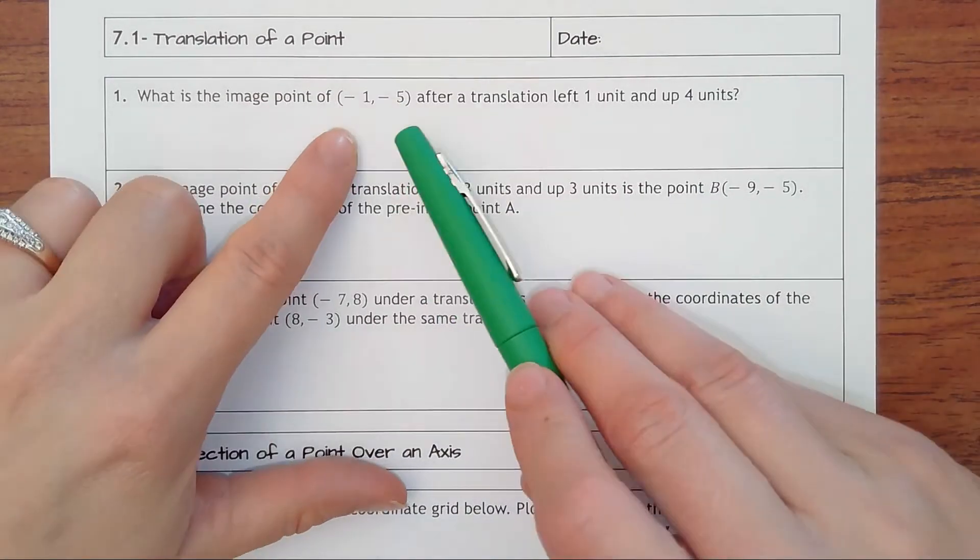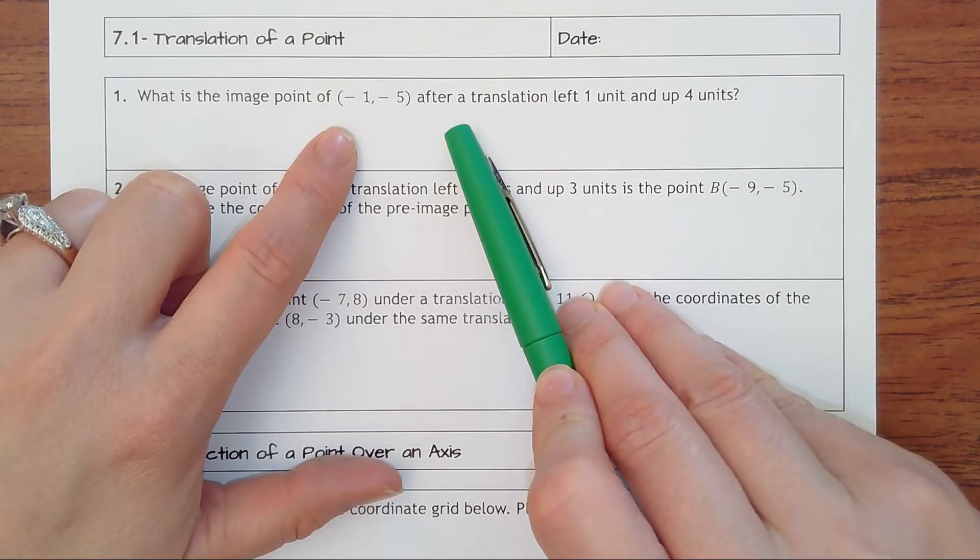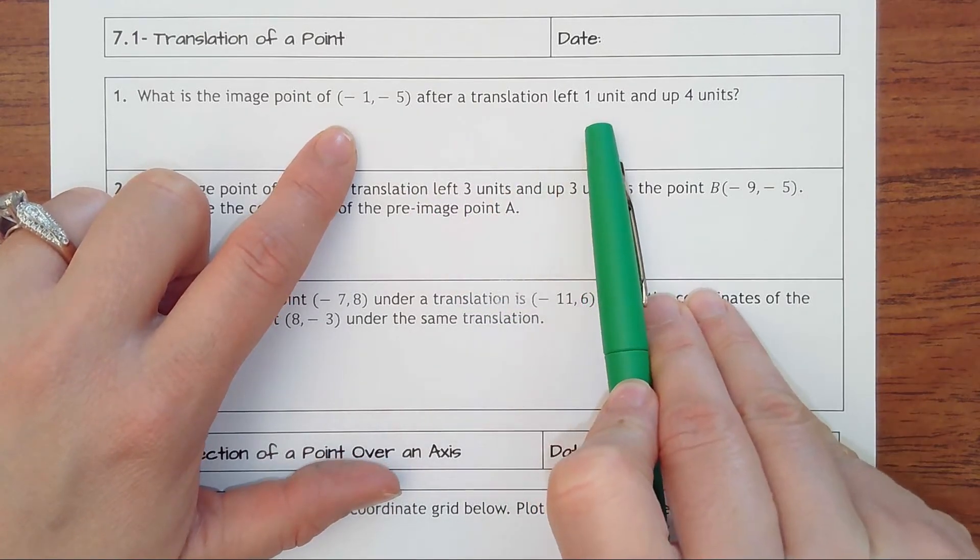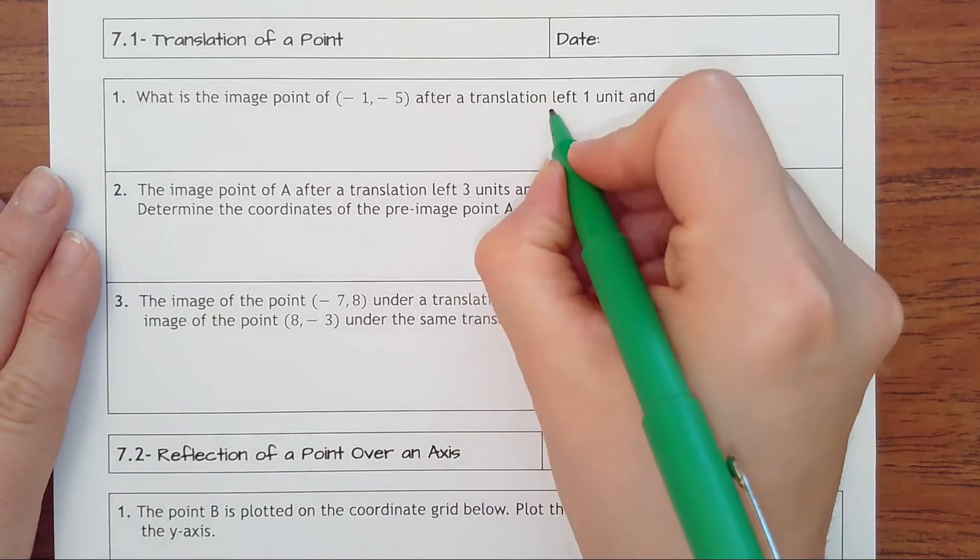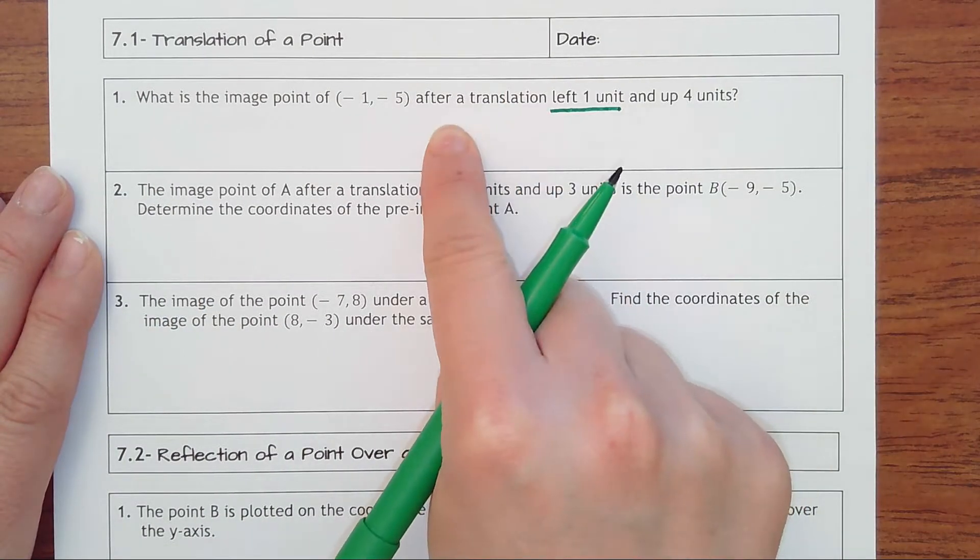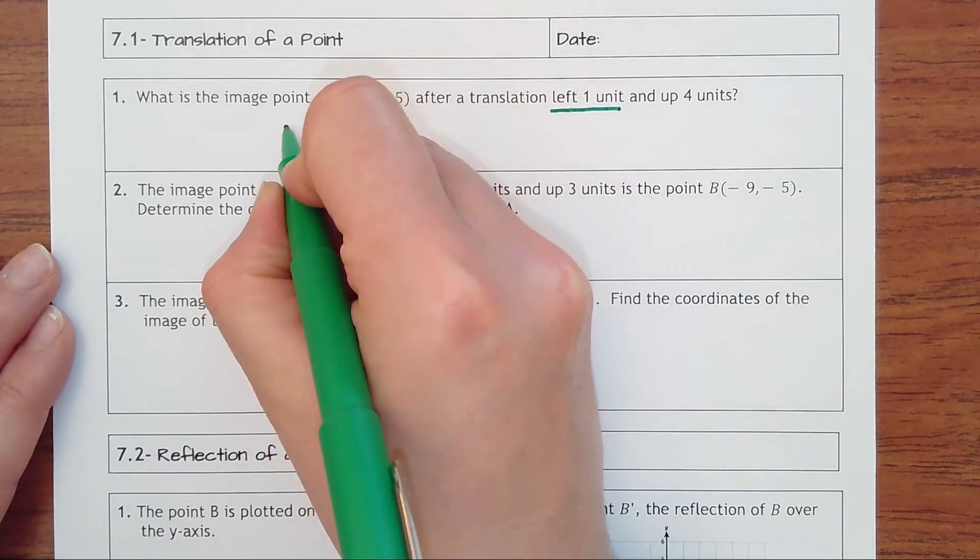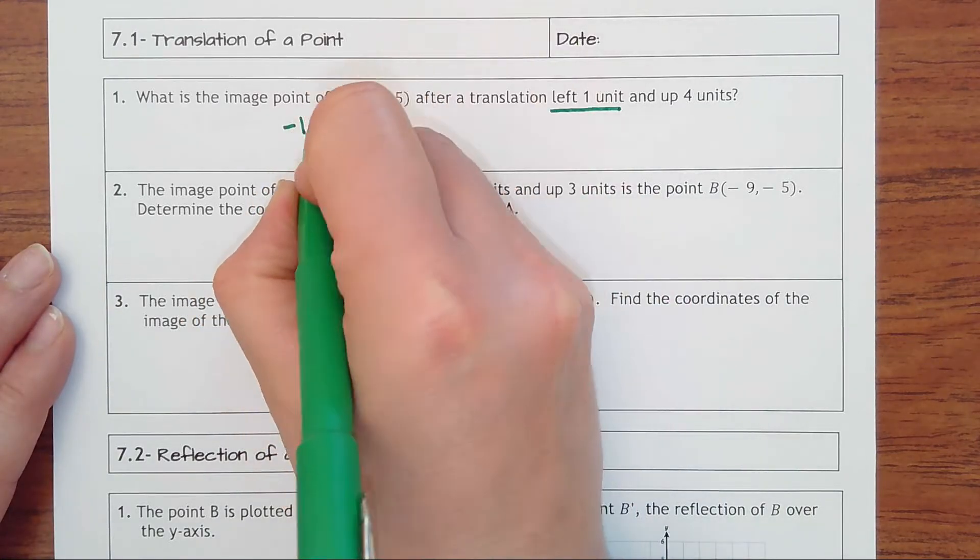What is the image point of (-1, -5) after a translation left one unit and up four? And so the way you want to think about this is you're going left one, so wherever that's at you want to move it back one. So you would take the x value of -1 and then you want to go minus one since you're going left.